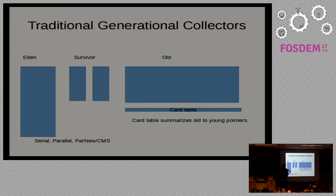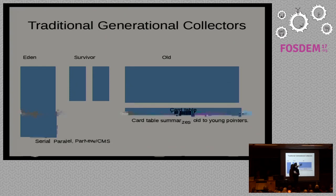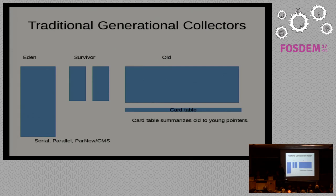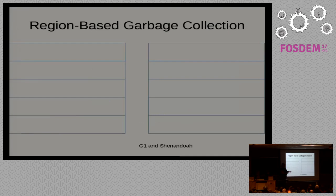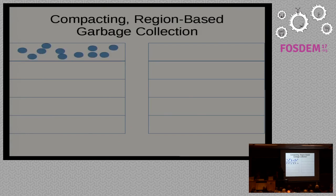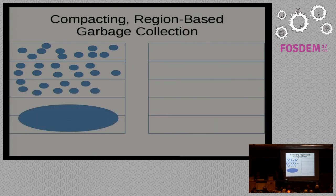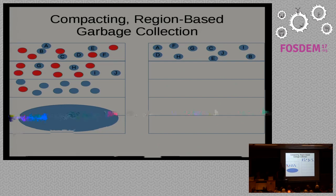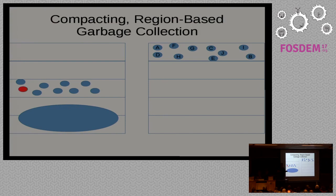Traditional collectors like Serial, Parallel, and ParNew are separated into generations — Eden, Survivor Space, Old Space — with a card table that summarizes old-to-young pointers so you can collect just part of the heap. Shenandoah doesn't use that. Shenandoah is a region-based garbage collector, as is G1. We break up the heap into regions; any region can be either old or young at a given point in time. We allocate into regions, and over time objects turn into garbage. We pick the most garbage-filled regions and compact them, then have free regions for allocation. It's slightly different from traditional semi-spaces, but not that different.